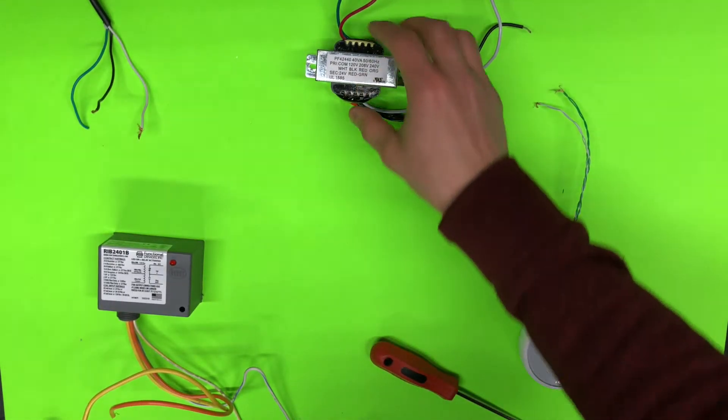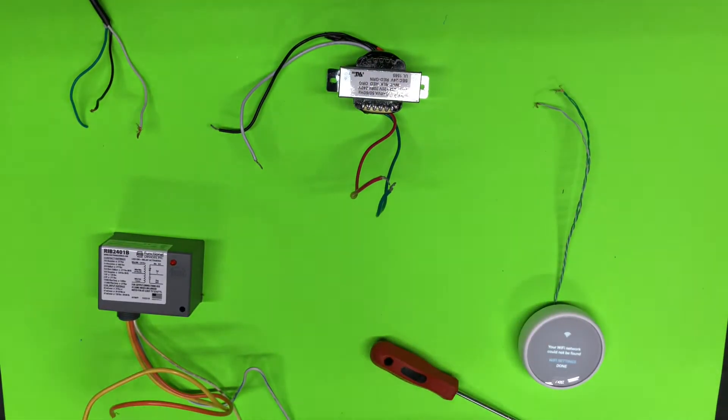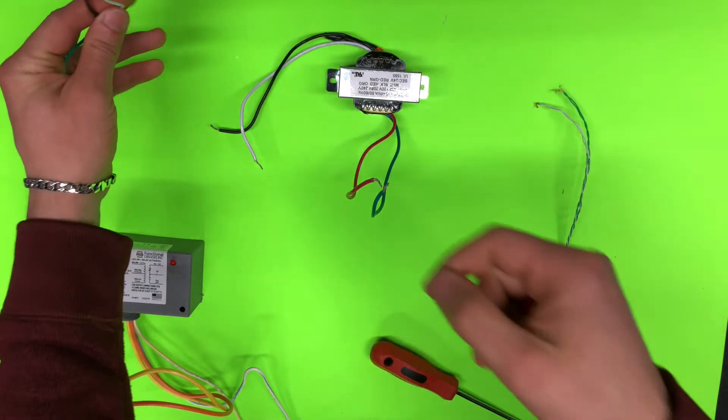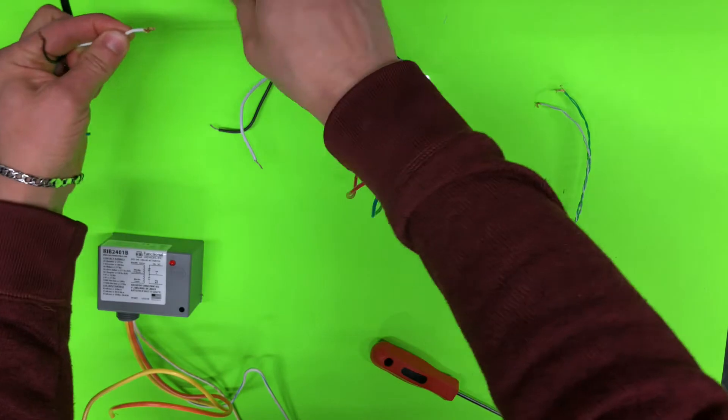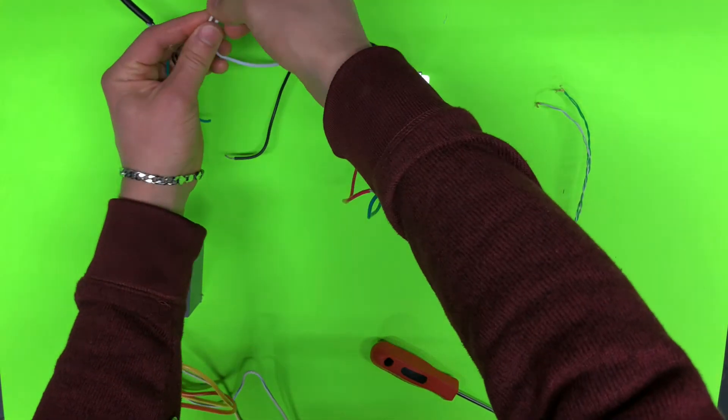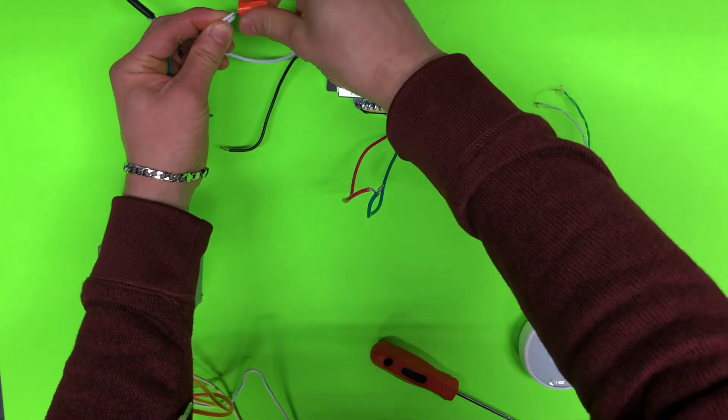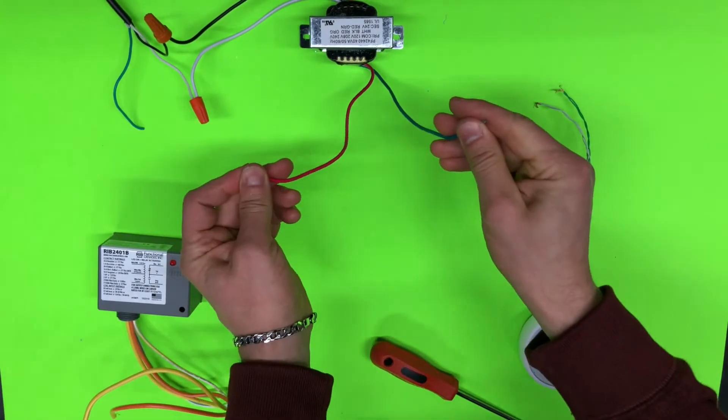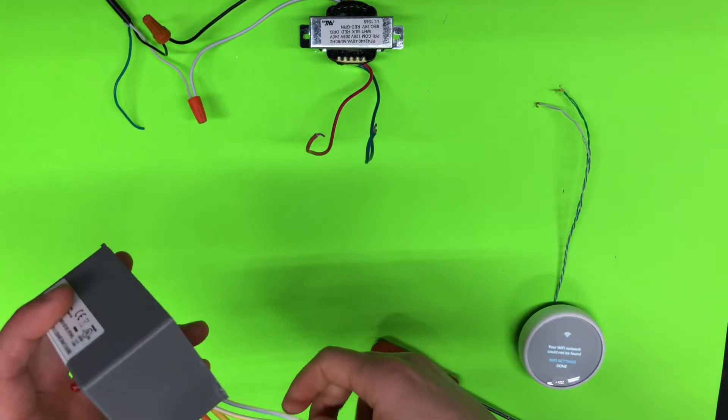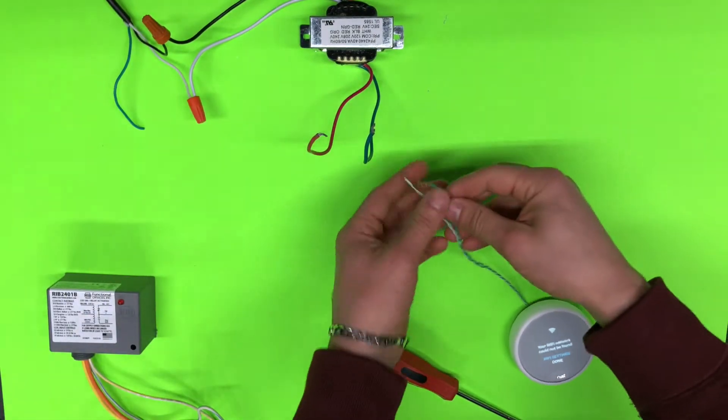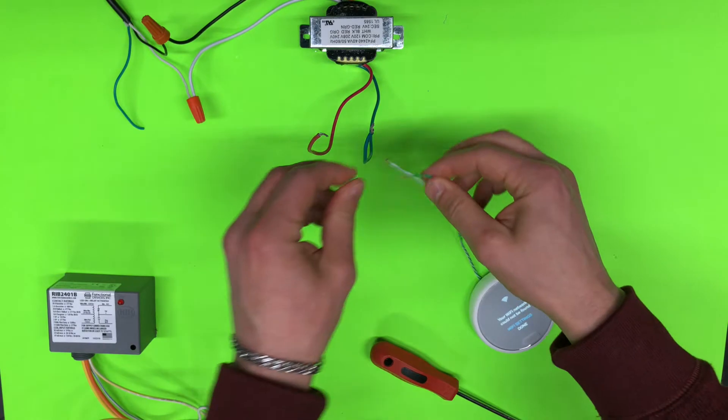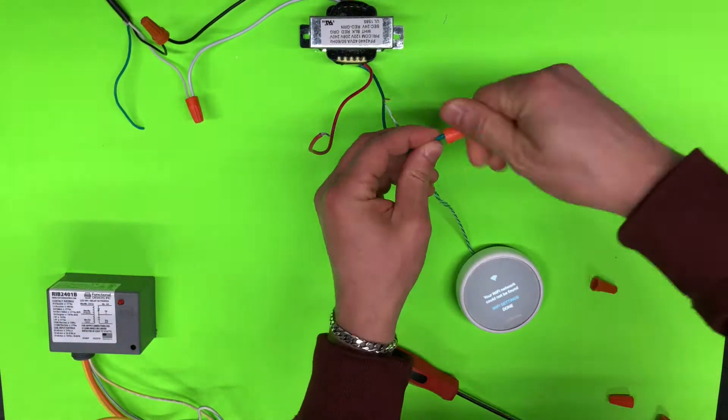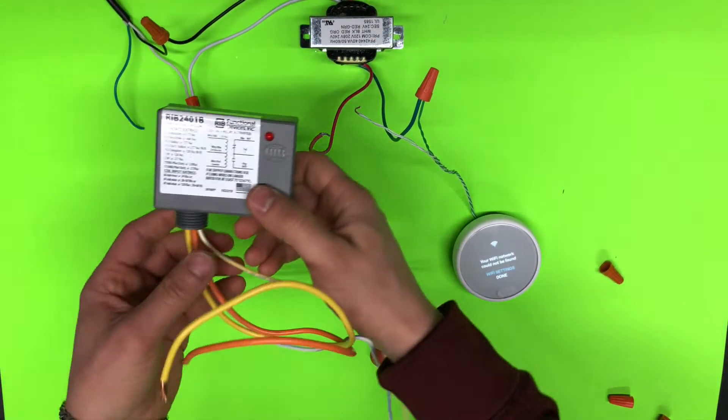Now let's connect our transformer. Double check this is not energized right now, so this is my main input, it's off. So I'm just connecting the transformer. Now for 24 volts, what we need to do is we'll connect the thermostat to one wire.